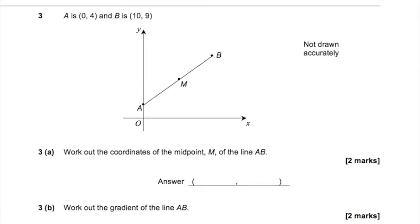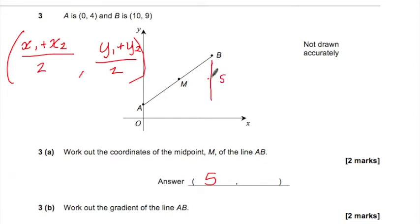Question 3. A is 0, 4, and b is 10, 9. Work out the coordinates of the midpoint M of the line AB. All right, so there is a formula for this, but I think it's kind of overkill. So it's kind of add together the two x-coordinates and divide by 2, and for the y-coordinate, add together the two y-coordinates and divide by 2. But you can think of it as I've got to go halfway along the x from A to B and halfway up the y-coordinates from A to B. So our x-coordinates go from 0 to 10, so halfway along would be 5. And our y-coordinates go from 4 to 9, so they're going up by 5, so we're going to have to go up 2.5 from 4. So you can think of it as this length is 5 and we want to go up 2.5. So 4 plus 2.5 is 6.5.